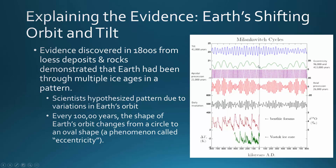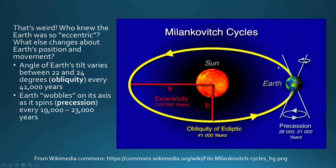We think of the word eccentric as being kind of odd, but here we're using eccentricity to show that Earth's orbit changes from a circle to an oval — just slightly. That change in orbit shape causes a change in the amount of solar radiation that reaches Earth.